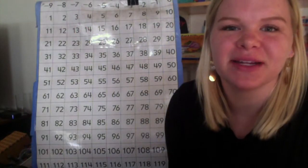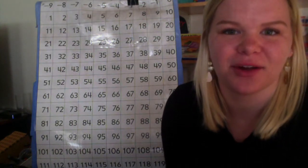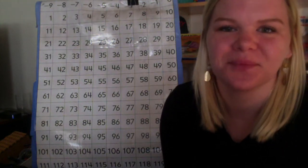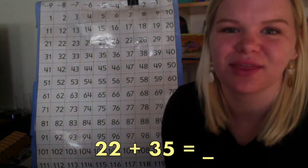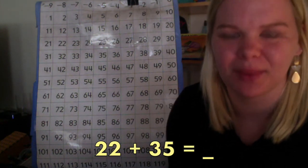The number grid is also very helpful when we are trying to add bigger numbers together. So, let's try this one. 22 plus 35. Those are pretty tricky, but our number grid can help us.